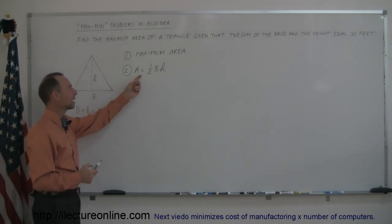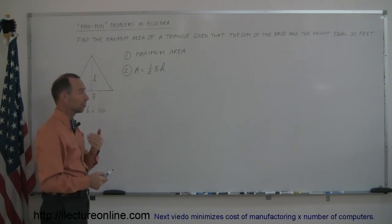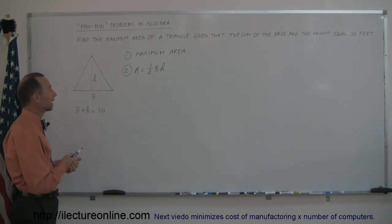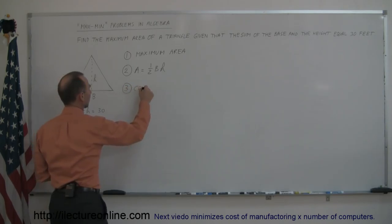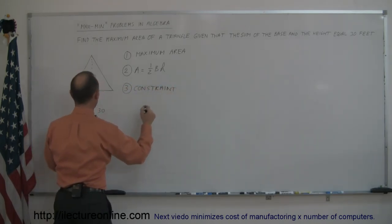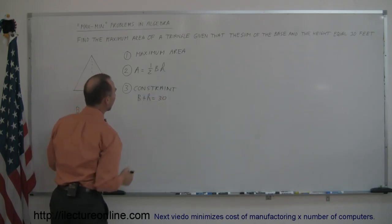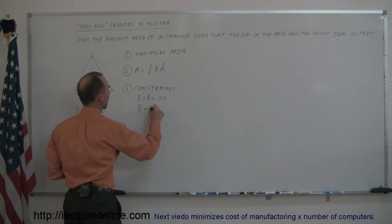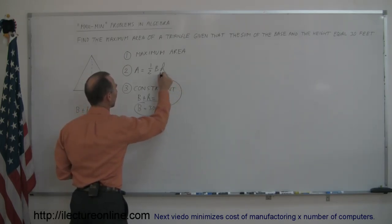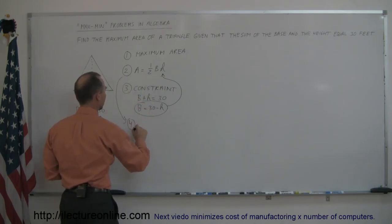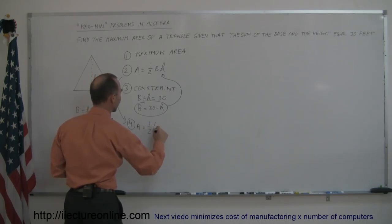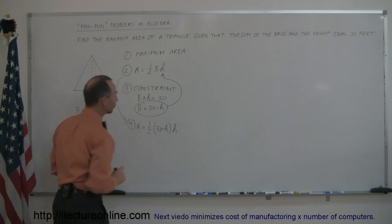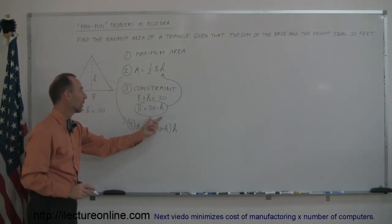Now you notice that the area is now defined with two variables, and in order for us to solve the problem, you need to have just a single variable. So you want to now find some sort of constraint, some sort of relationship between the base and the height that will allow us to write this equation in terms of just one variable. So the constraint in this case is that the base plus the height equals 30. And now if we solve this equation for one of the two variables, in this case we can solve for the base equal 30 minus the height, and we plug this back in the original equation. We now have a new equation for the area, which is now dependent on only one variable. So 30 minus h times h.